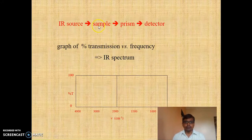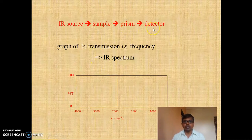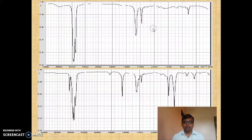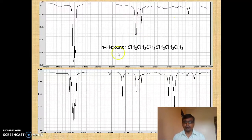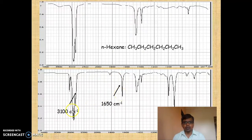How does the IR instrument work? It is very simple: IR source, then the sample, then a prism, and finally the data is recorded to give an IR spectrum. For example, this is the IR spectrum of cyclohexane — you can see peaks due to C-H stretching as well as peaks for bending vibrations. A peak at about 1650 cm⁻¹ clearly indicates the molecule may have a carbon-carbon double bond.